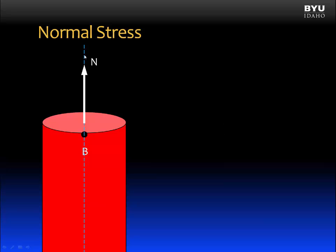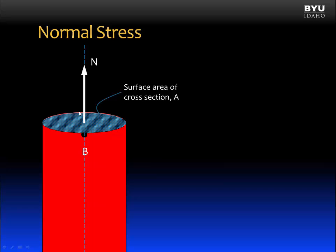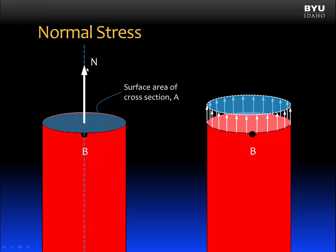Here I've shown the internal resultant load as a normal force, acting right through the centroid of this cross section and perpendicular to the cross section. Now, we know that force really isn't just traveling through the centroid — the whole member, all this material, is participating in transferring these internal loads. This cross section has a surface area that we're going to call A, and to represent what's really happening, we're going to take that normal force and spread it over the entire cross section.